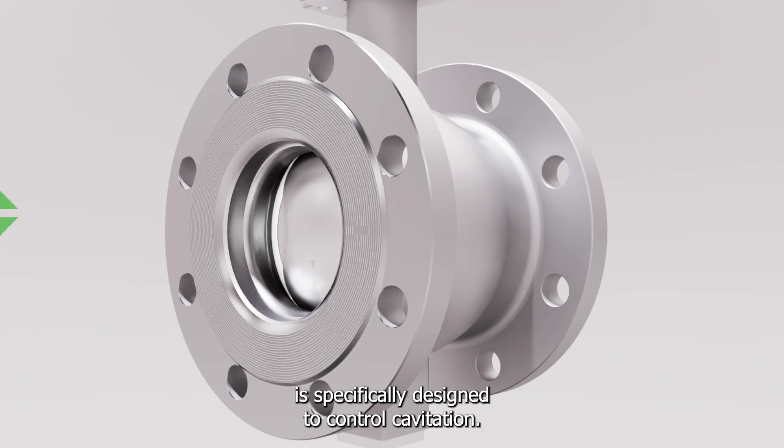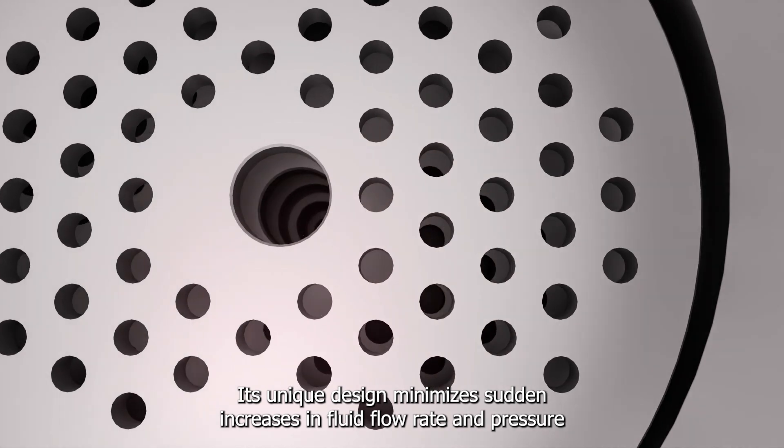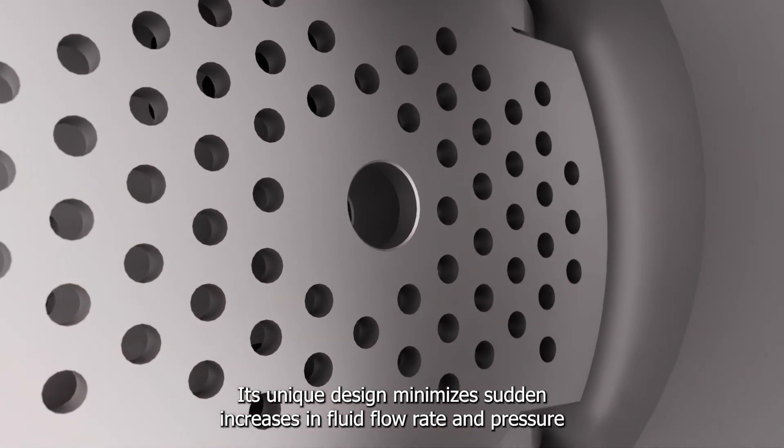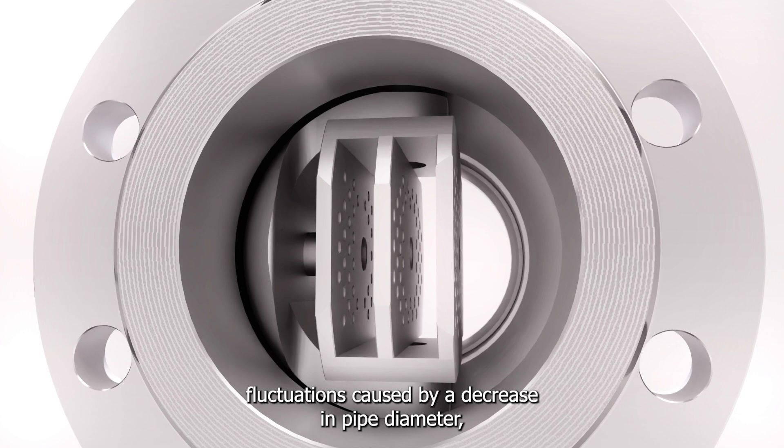Nellis Q-Trim is specifically designed to control cavitation. Its unique design minimizes sudden increases in fluid flow rate and pressure fluctuations caused by a decrease in pipe diameter, thereby preventing cavitation.